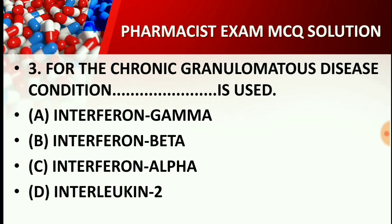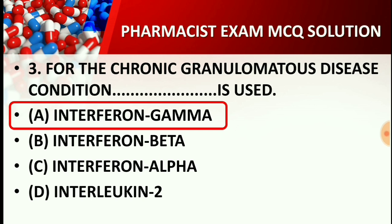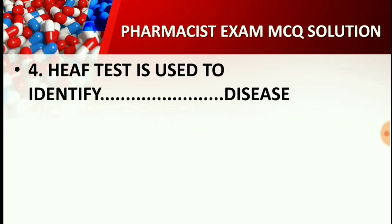Question number three: For the chronic granulomatosis condition, which one is used? Options are: Interferon alpha, Interferon beta, Interferon gamma, and Interleukin-2. You may pause the video to think about the right answer. The right answer for this question is Option A: Interferon gamma.